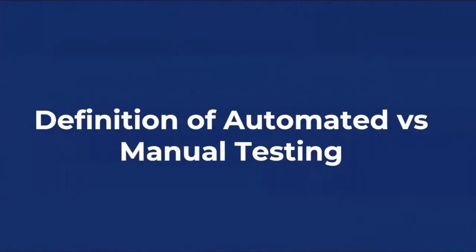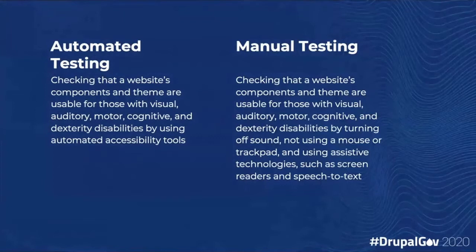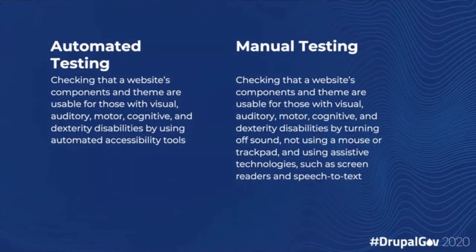Now I want to get into the meat of the presentation: what automated and manual accessibility testing actually are. Automated testing is checking that a website's components and theme are usable for all disability types by using automated accessibility tools. It doesn't mean you don't have to do anything — a lot of the work is cut out for you already. I don't list content in the definition here; it's a very big lift to test every single piece of content, so I highly recommend following the guidelines to write your content to be accessible before it's even tested.